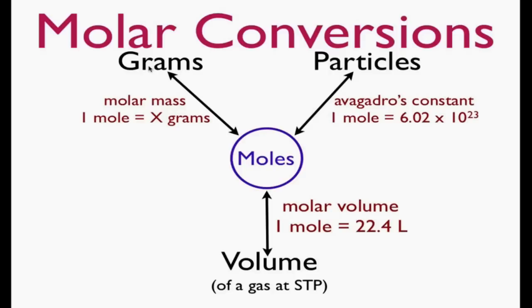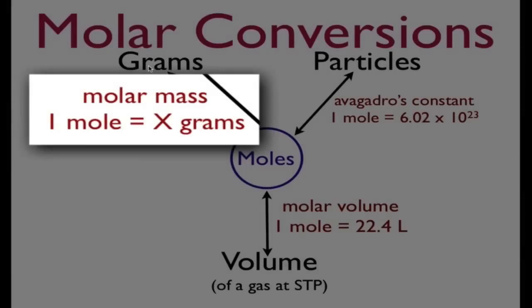We know that if we have a certain number of grams of substance, we can convert to moles through its molar mass of that substance, because we know that one mole of any substance has a fixed mass.